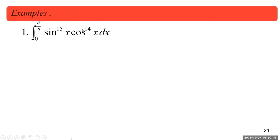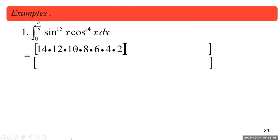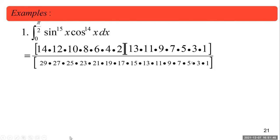For an integral of sine to the 15 times cosine to the 14 from 0 to pi over 2: the first power is 15, so the numerator starts 14, 12, 10, 8, 6, 4, 2. The second power is 14, so its sequence is 13, 11, 9, 7, 5, 3, 1. The denominator sum is 29, 27, 25, and so on. Since not both are even, the multiplier is 1. You can cancel common factors — for example, 15 and 10 share a factor, giving 3 and 2; 6 and 3 cancel; 12 and 21 give 4 and 7; 14 and 7 simplify further. The result expressed as prime factors is 2 to the 12 over 3 cubed times 5 squared times 17 times 19 times 23 times 29.